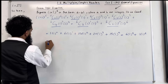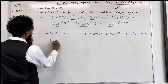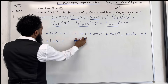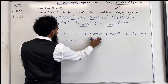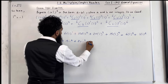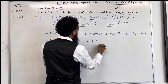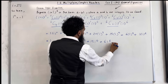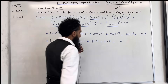So now I can remove the brackets. That becomes 1, plus 6i, plus 15i squared, then 20i cubed, 15i to the power 4, 6i to the power 5, and i to the power 6.